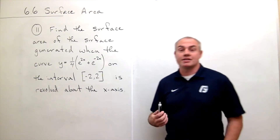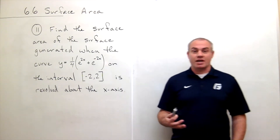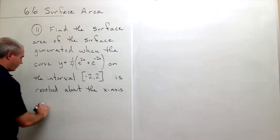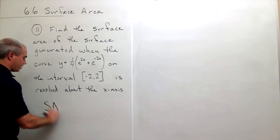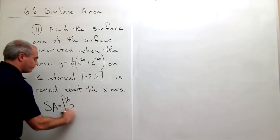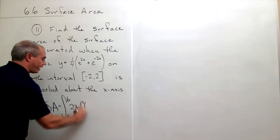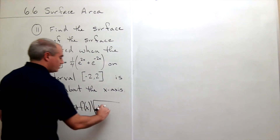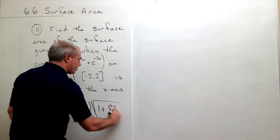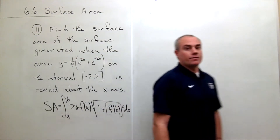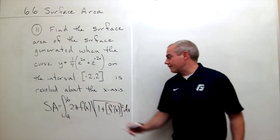Quick reminder: what is the equation for the surface area generated when we revolve a curve around an axis? Our surface area formula is the integral from a to b of 2 pi times f of x times the square root of 1 plus f prime of x quantity squared, dx. That is our surface area formula.